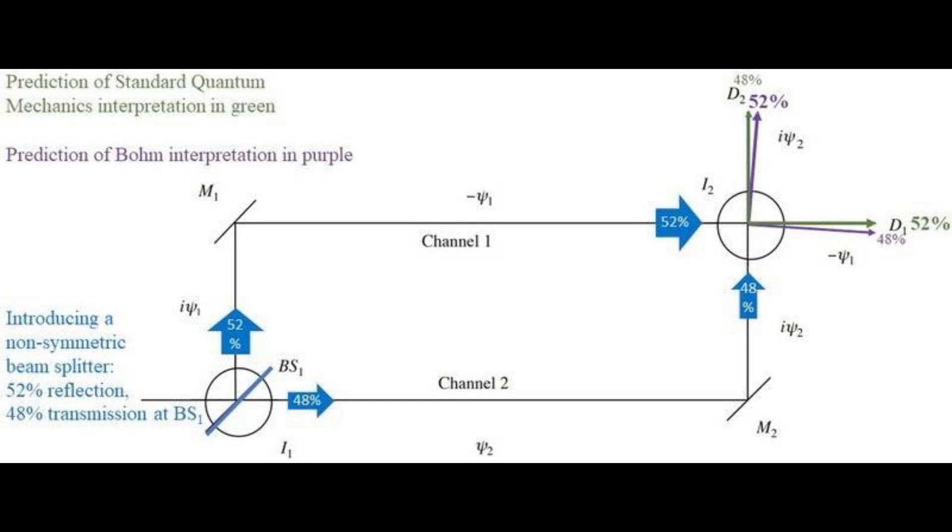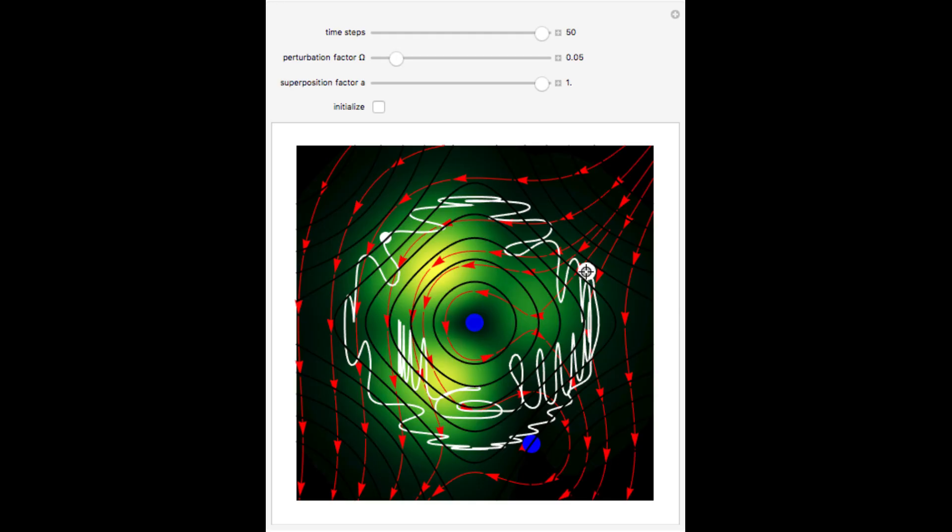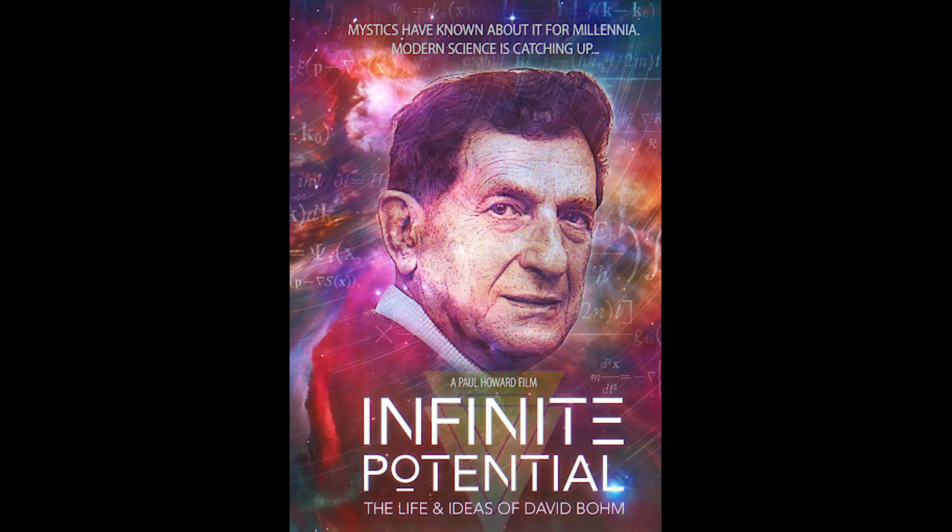David Bohm has proposed an alternative interpretation that involves hidden, non-local variables. According to Bohm, observed particles are manifestations of a deeper underlying reality that he calls intrinsic order. In this framework, the revealed order, our observable universe, is merely a superficial expression of the implicit order.